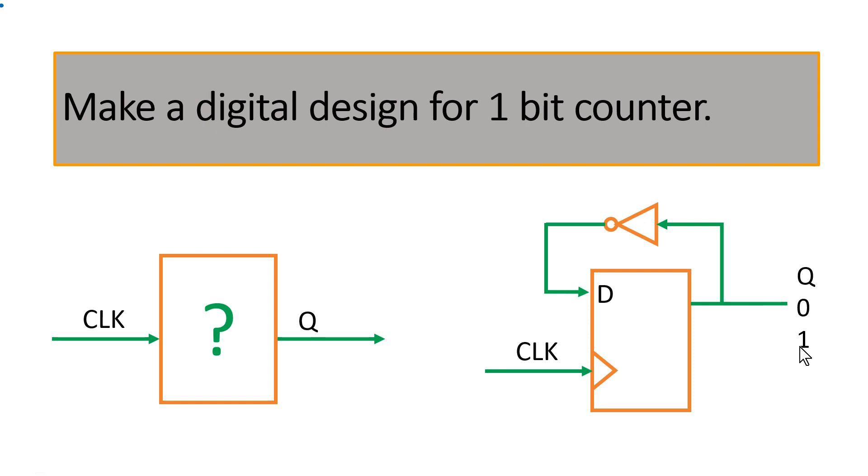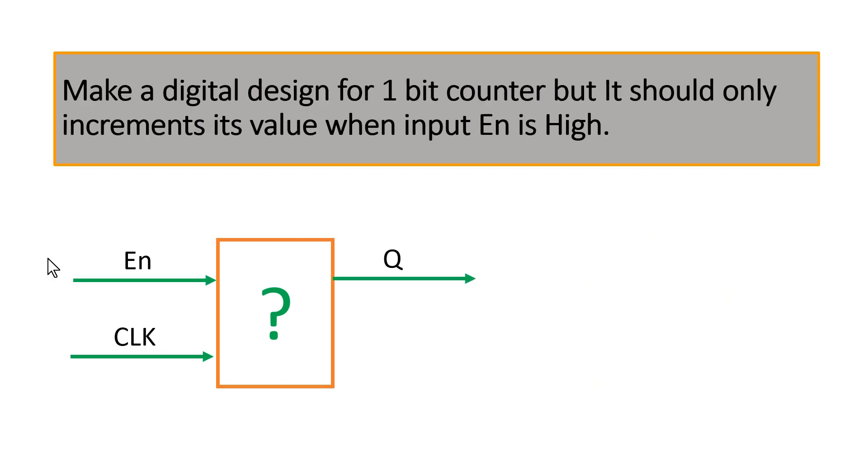Now let us move ahead in this interview session. Now in the next stage the interviewer will ask you to design a digital design for one bit counter but it should only increment its value when the input enable signal is high. So you have to fill this black box. Now you have one extra input that is enable. So when this enable is high then only your counter should increment that means your Q should increment. When it is zero it should hold its previous value. You can take your time you can pause this video otherwise I will let you know the answer.